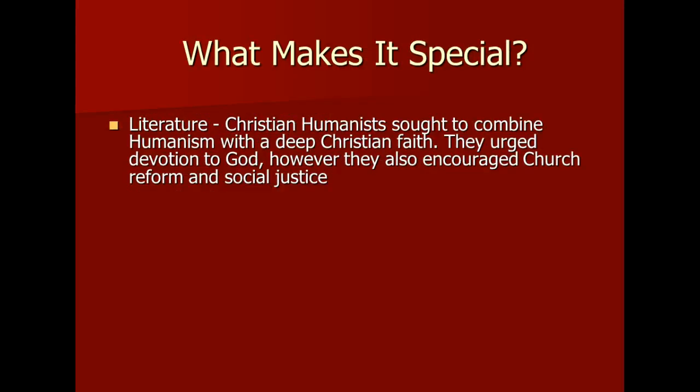What makes the North special? Whenever we get into literature, there's a new type of humanism that crops up. Down in the Italian city-states, we had civic humanists — civics, of course, is about government and things like that — talking about what kind of government you should have, and Castiglione's writing about how to be a proper Renaissance man if you're going to hang out at court. Once we get out of that area, we start to get into a different kind of humanism, and that's Christian humanism. This is going to be one of the main differences. We'll see it in the art and in the writings — this idea of what role is God playing in our lives. So Christian humanists sought to combine humanism with deep Christian faith, devotion to God, encourage Christian reform, and social justice.